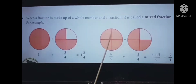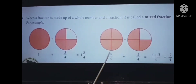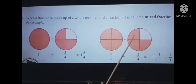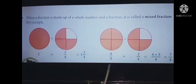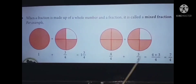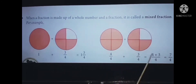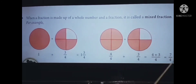Next example: one whole part with four-fourths, plus three parts shaded. That gives four by four plus three by four, equal to four plus three by four, equal to seven by four.